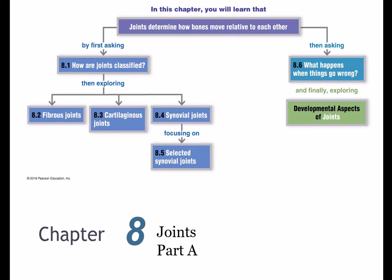Now that we've learned bones and bone markings, we're going to look at those connection points in a little bit more detail. What we're talking about now is our joints or articulations — what gives your skeleton its mobility and flexibility. This lecture is going to focus mostly on how joints are classified and then some general anatomy of the fibrous, cartilaginous, and synovial joints. I've got some videos for you.